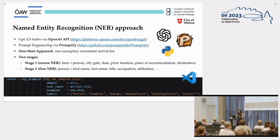Currently, a second stage is also being integrated into the workflow where the information given per person is again differentiated into further subcategories like first name, last name, title, occupation, and so on.